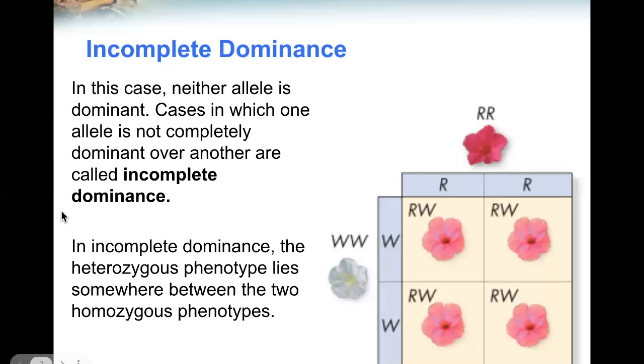In incomplete dominance, the heterozygous phenotype lies somewhere between the two homozygous phenotypes.